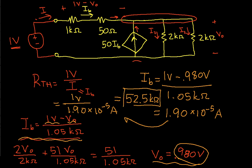Okay, so basically by applying this test voltage and finding the resulting current that goes in, we've discovered that the Thevenin equivalent resistance of the circuit is 52.5k ohms. So let's see if we have time to work it the other way.